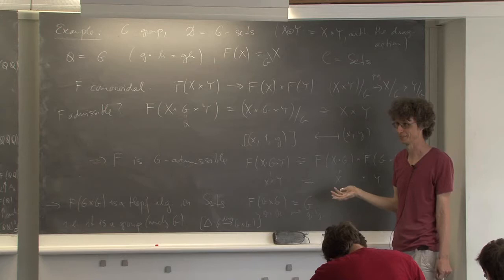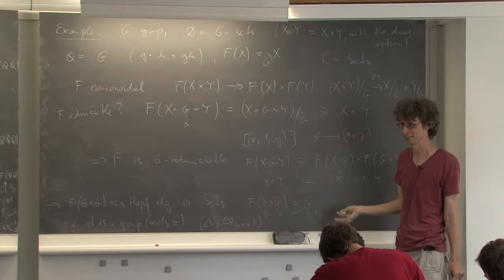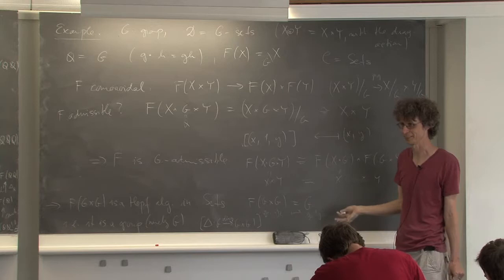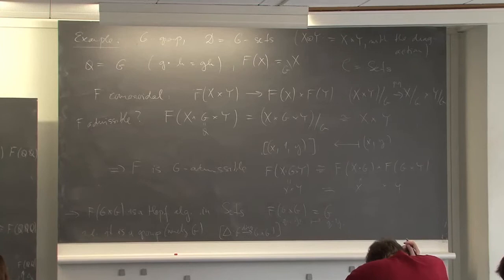Did we achieve anything? No. Because we already started with the group itself, then we did something unspeakable to it, and recovered the group back. So at least we might be happy that we didn't do anything really bad — things are back to normal. Let me now tell you the same example just in a more algebraic fashion — when instead of a group we will be talking about the enveloping algebra — but it's really the same thing.